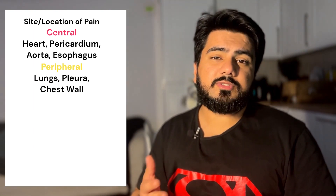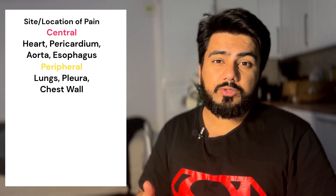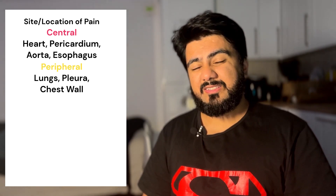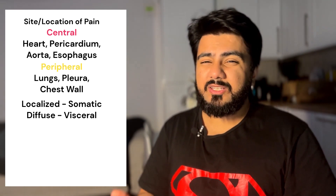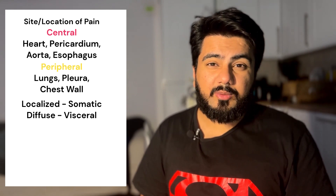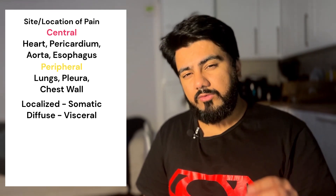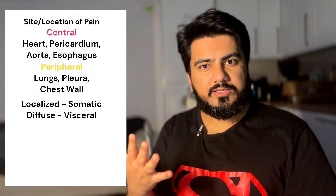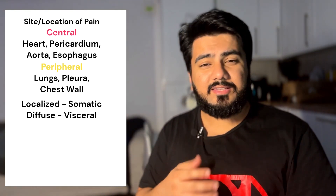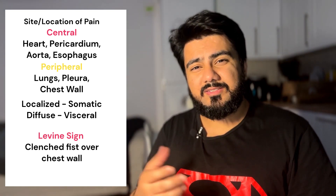It's time to take a proper history and then do an examination. I'm a huge fan of the SOCRATES approach when it comes to taking a pain history. The first thing we will talk about is the site or location of the chest pain. Central chest pain can be coming from the heart, the pericardium, the aorta, or even the esophagus. Peripheral chest pain can come from the chest wall, muscles, bones, or lungs and pleura. A small localized region suggests somatic pain rather than a visceral organ. When patients use their clenched fist or palm on the front of their chest, this is the Levine sign and can signify cardiac origin.